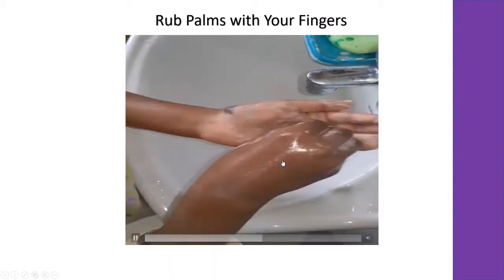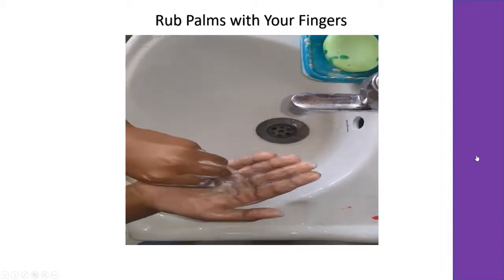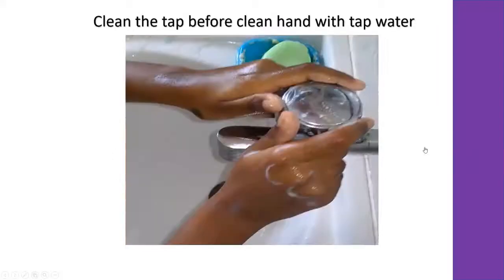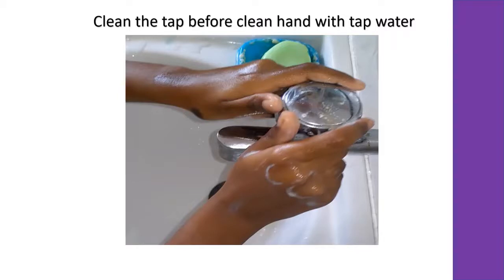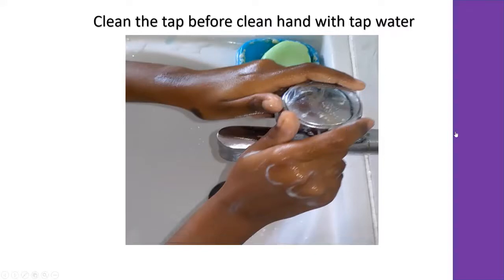This is the sixth method. After cleaning, we should also clean the tap because we already touched it with contaminated hands before washing. Before finishing, completely rinse our hands with water to remove the soap particles, and clean the tap with soap and water as well. After cleaning the tap, we will not touch the contaminated area again. This is the method of the soap and water technique to clean our hands.